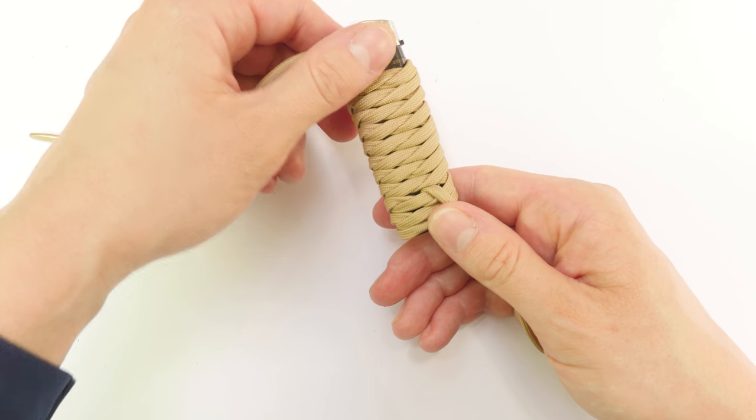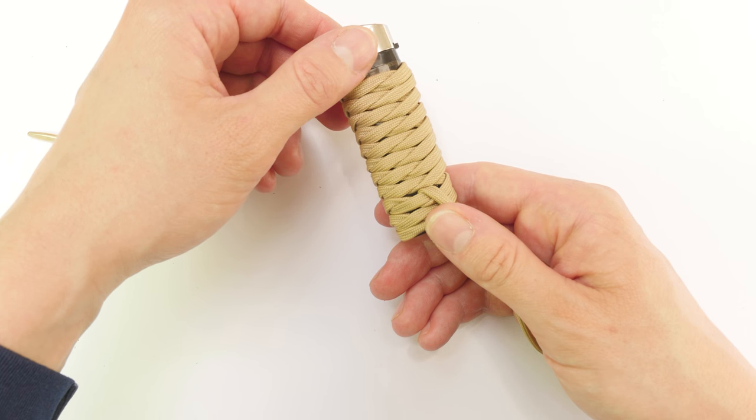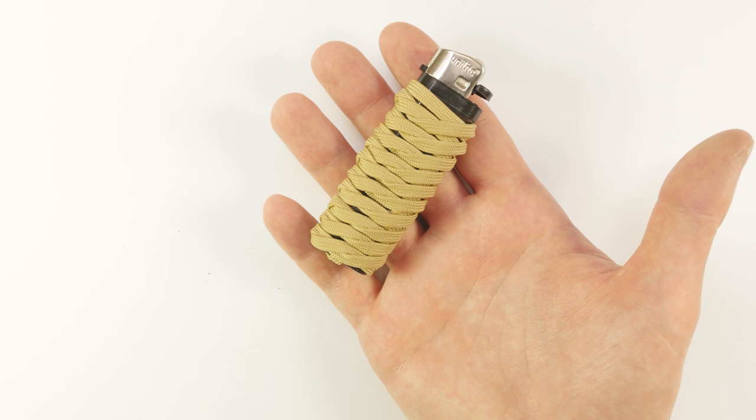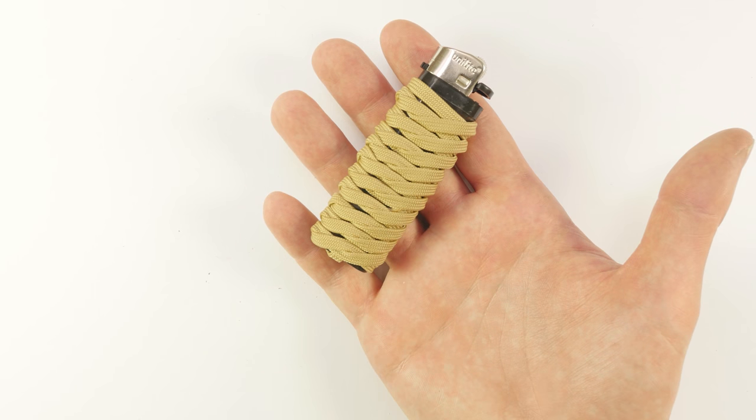At this point cut and melt the two ends, and you are done. After cutting the ends, our lighter wrap is complete.